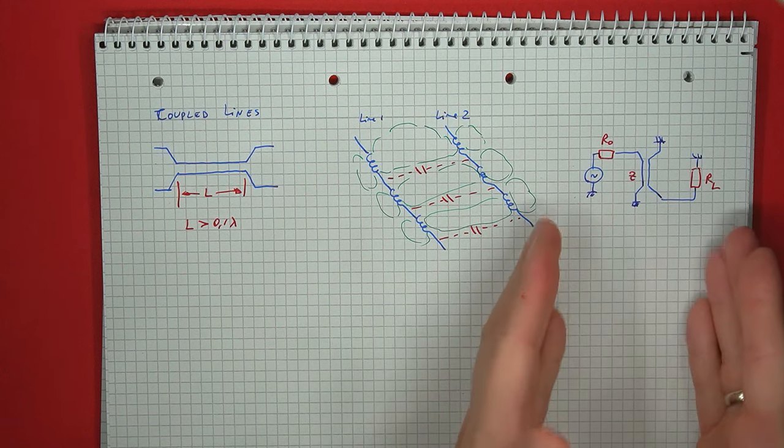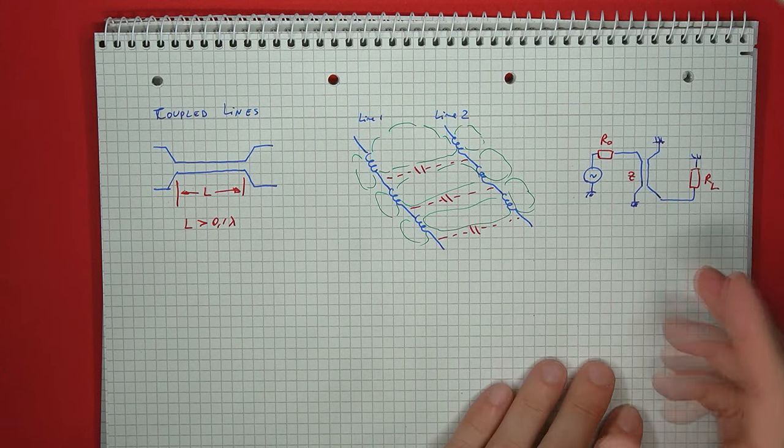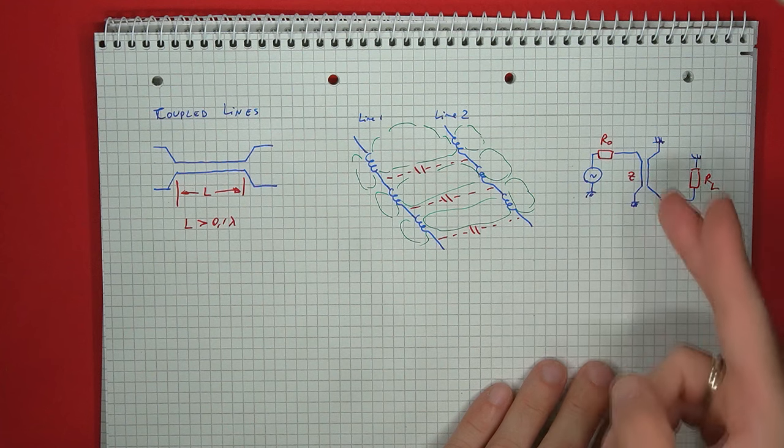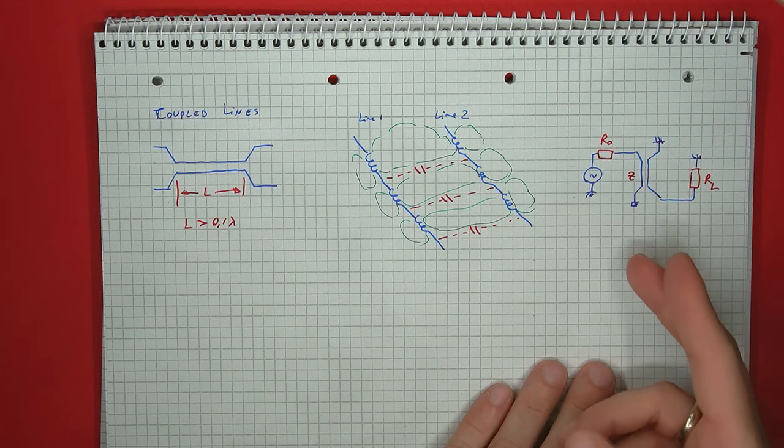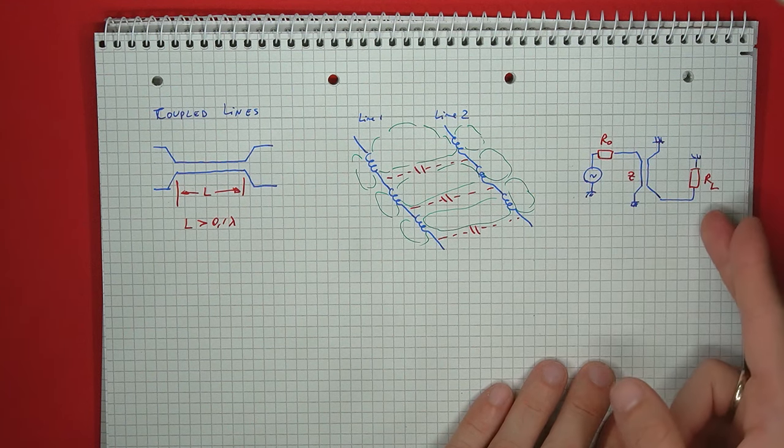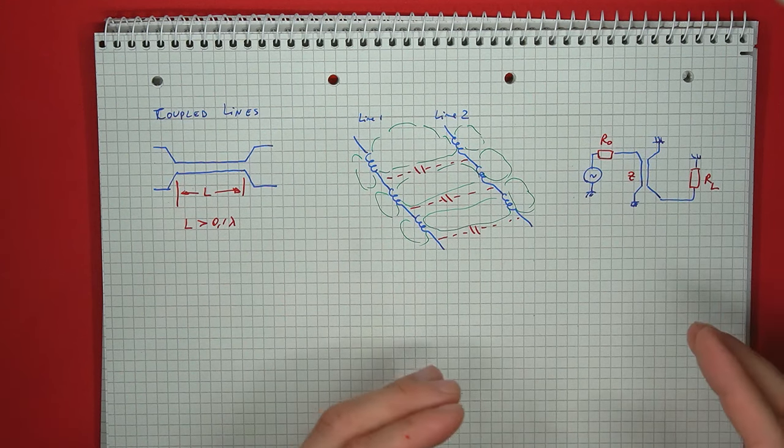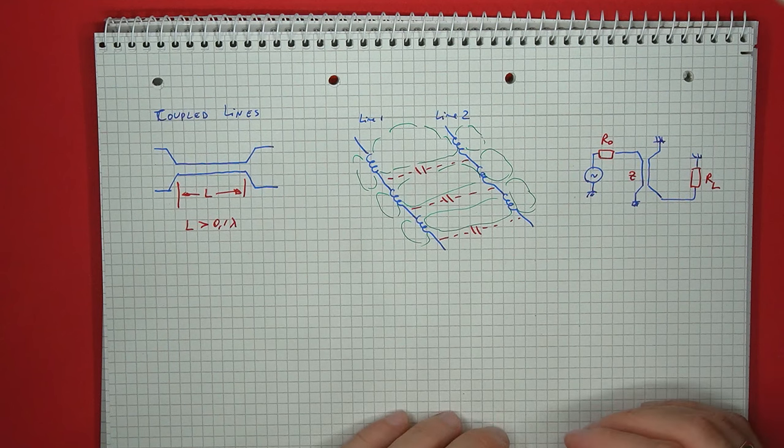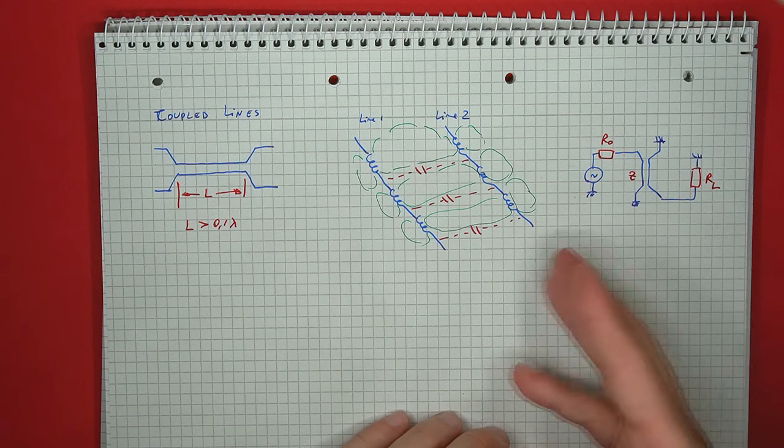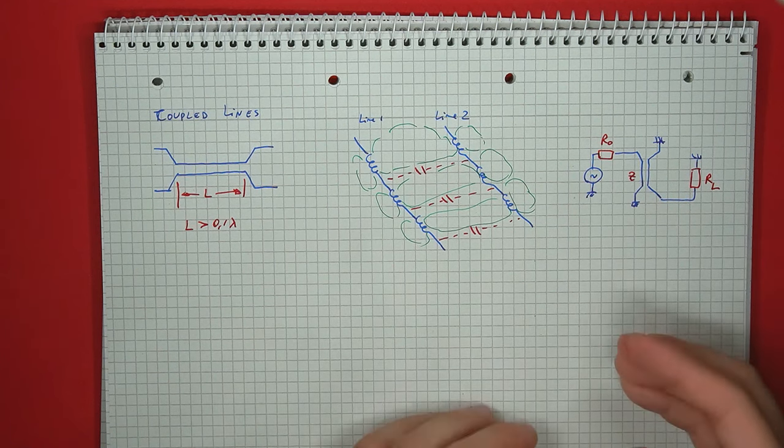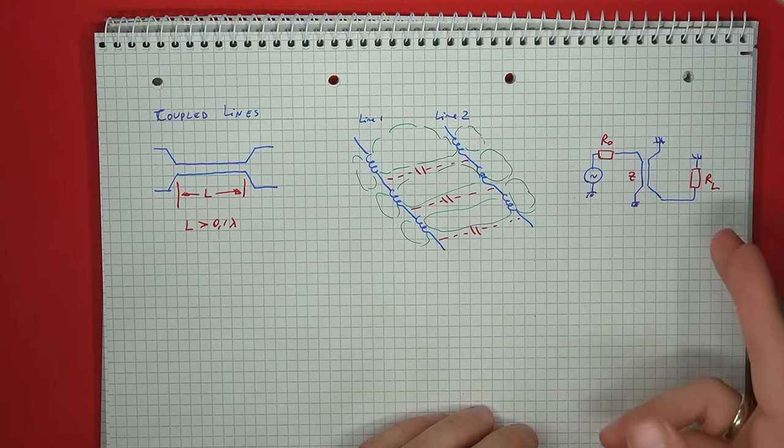Now, as long as all of the impedances are matched, so the signal source's output impedance, the characteristic impedance of the transmission line, and the load impedance, this sort of coupling will give a very nice and very flat response over a wide frequency range. But if there is a mismatch, you will see all sorts of variations in the transmitted signal.